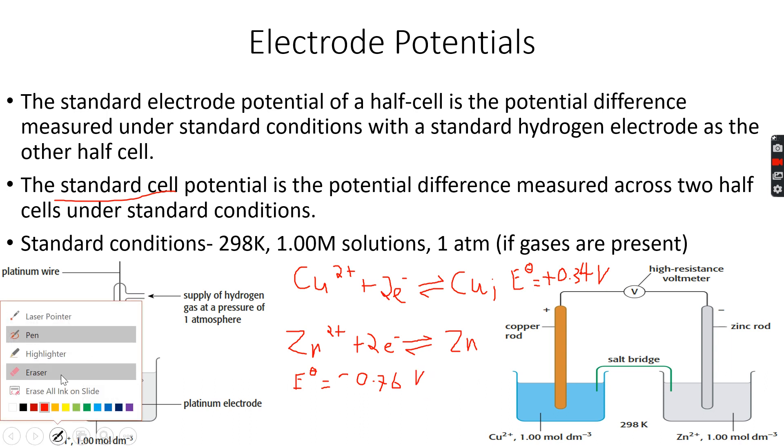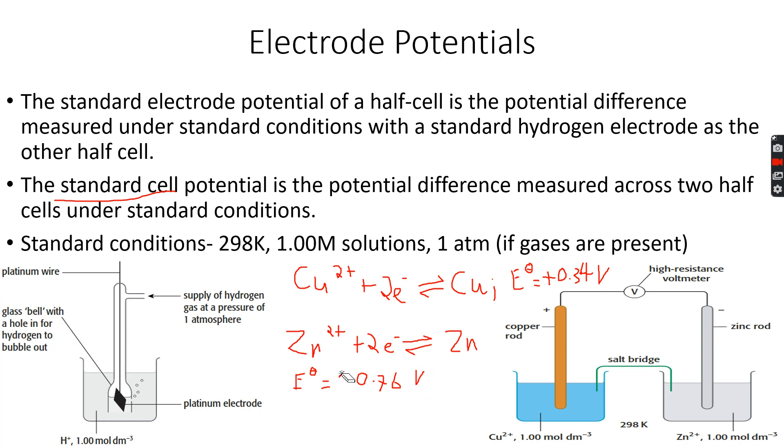Let me just bring the minus closer to the 0.76 so that you understand. So now let's see what's happening. The Cu2+ has an electrode potential of plus 0.34.